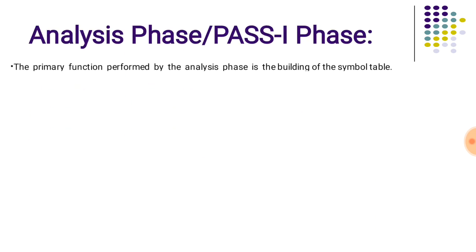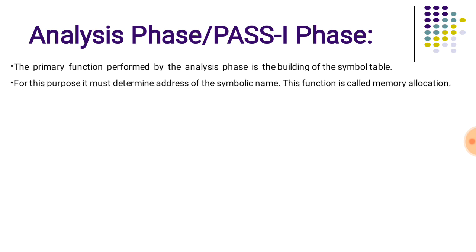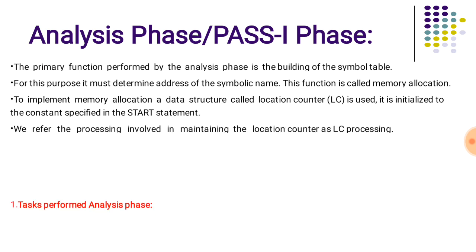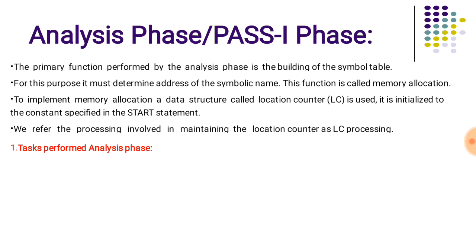In the analysis phase, the primary function performed is building up the symbol table. For this purpose, it must determine the addresses of symbolic names — this function is called memory allocation. To implement memory allocation, a data structure called the location counter is used, and it is initialized to the constant specified in the START statement. START is an assembler directive which indicates the starting address of the location counter.